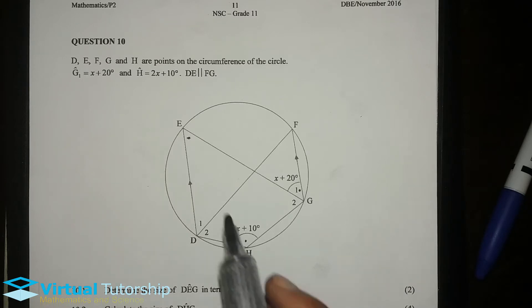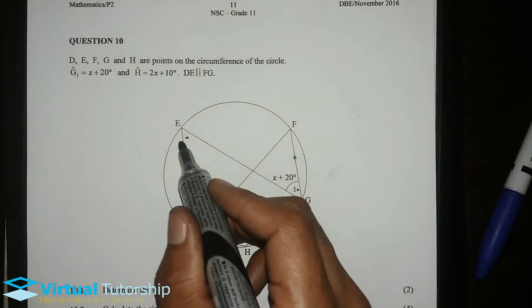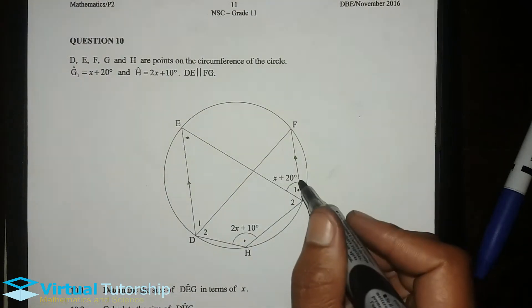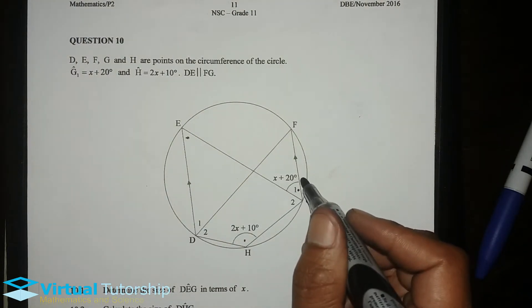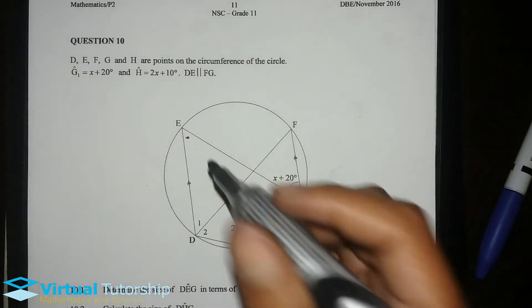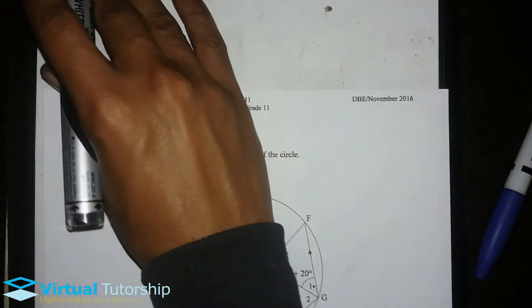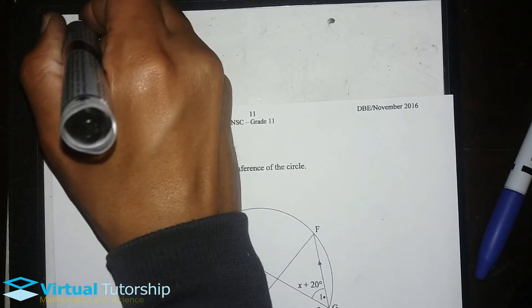Now, 10.1. The size of angle DEG. So, the angle is equal to angle G1. Why? Because of the parallel lines. Alternate angles. Now, 10.1.